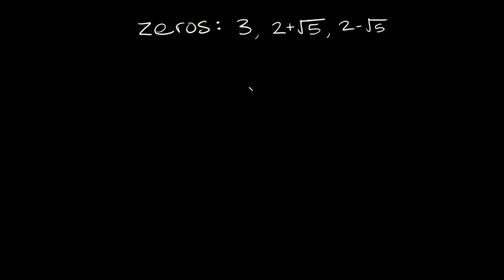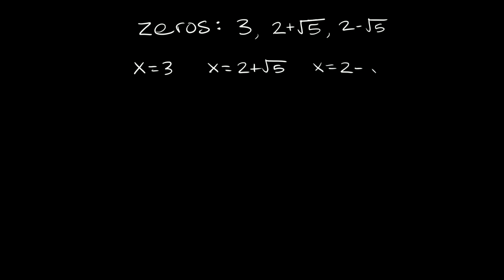There are two different ways we can solve this type of problem — either straight distribution or by grouping. I'm going to show you both ways. Let's start with the distribution method. The first thing we have to do is find our factors by setting x equal to all of our zeros: x equals three, x equals two plus the square root of five, and x equals two minus the square root of five.